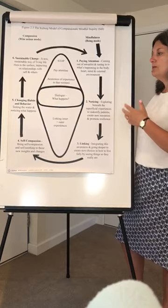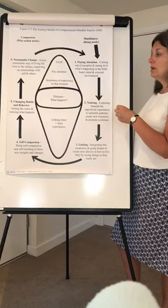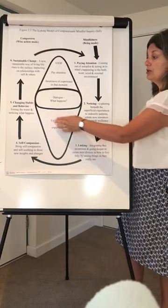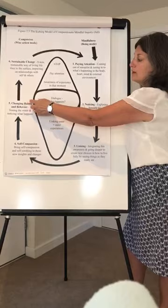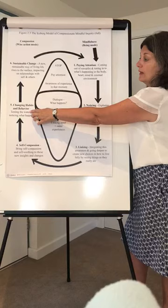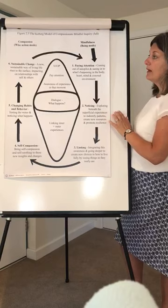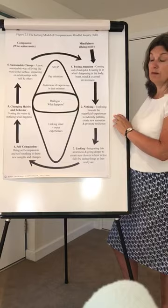Then we lead through to more explicit ways of changing habits — how we can use the compassion skills, the self-soothing, the self-compassion to change habits. We're testing the water and noticing what happens as we do that. Through doing that consistently, and linking back to noticing what happens, over time it can lead to sustainable change. A new sustained way of living life rises to the surface, impacting on relationships with the self and others.